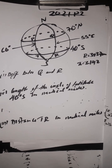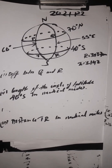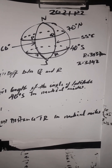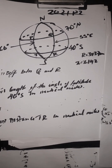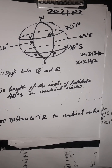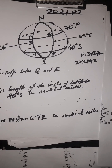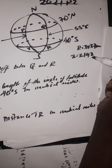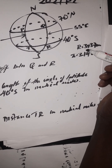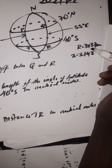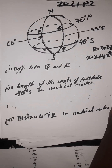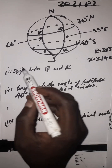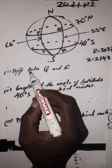Earth geometry 2021 paper 2. The question reads: the points P, Q, R and T are on the surface of the earth as shown in the diagram below. Take pi to be 3.142 and the radius of the earth to be 3437 nautical miles.